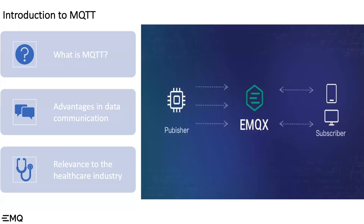What are the advantages for data communication we see from this protocol? Three stand out, especially in this field. Number one, it's incredibly reliable. It is equipped to scale up and support large IoT deployments. And there is also broad support for various programming languages. Going back to reliability — through MQTT you are given three different levels of quality of service, or QoS: zero, one, and two. Zero being at most once, one being at least once, and two being exactly once.